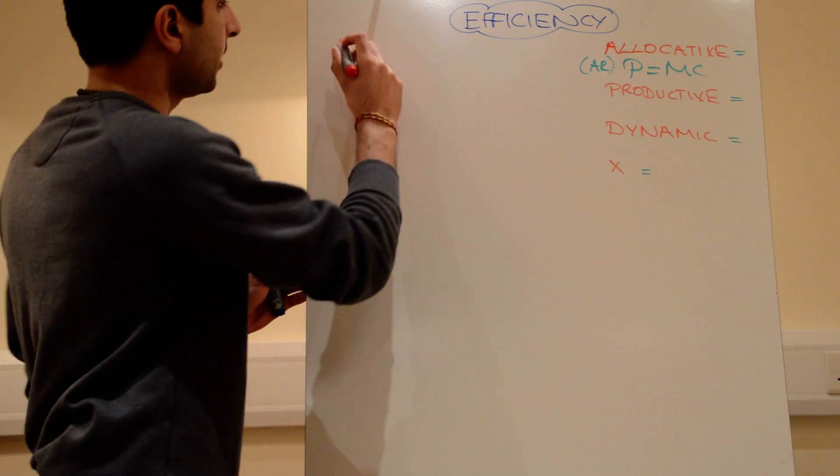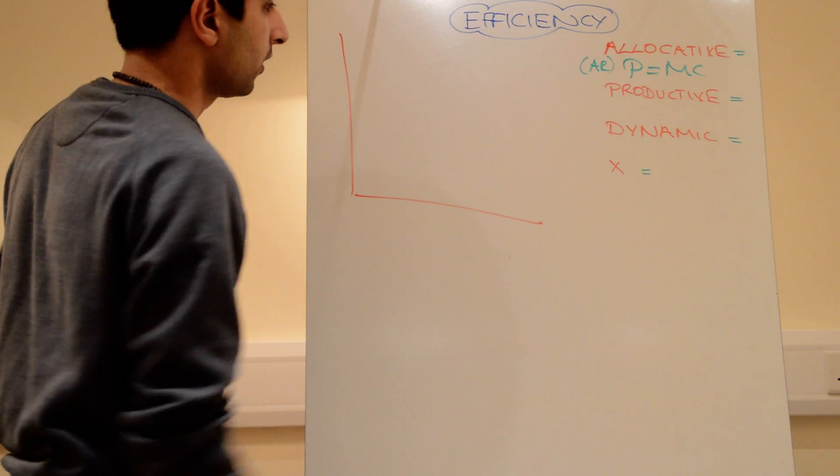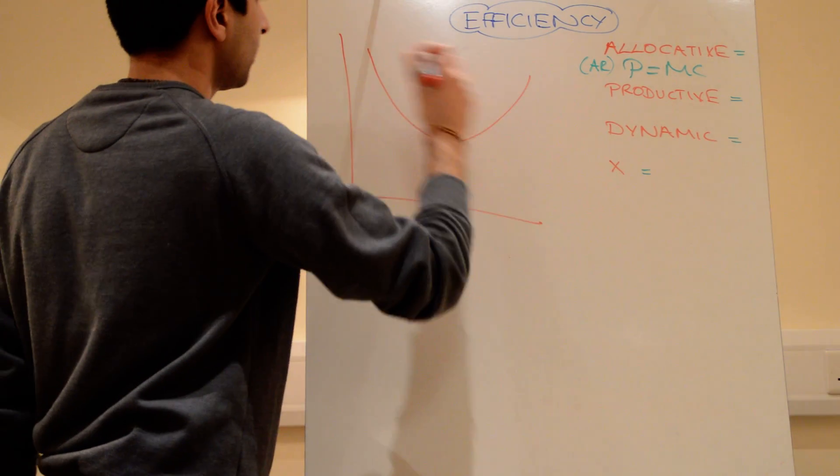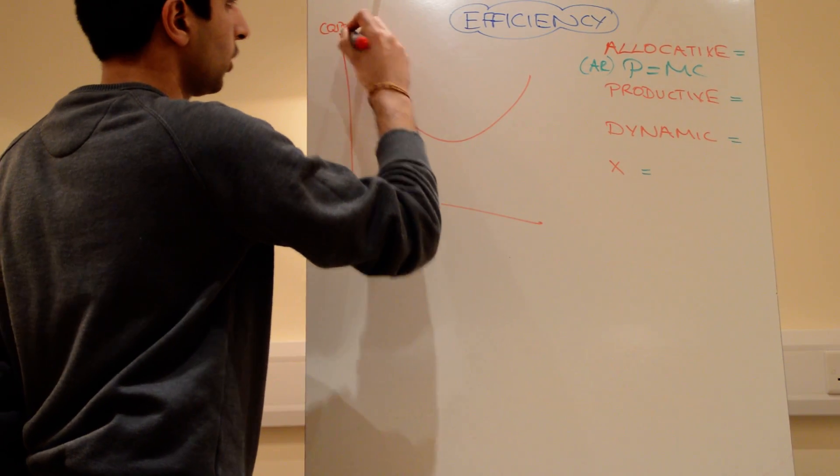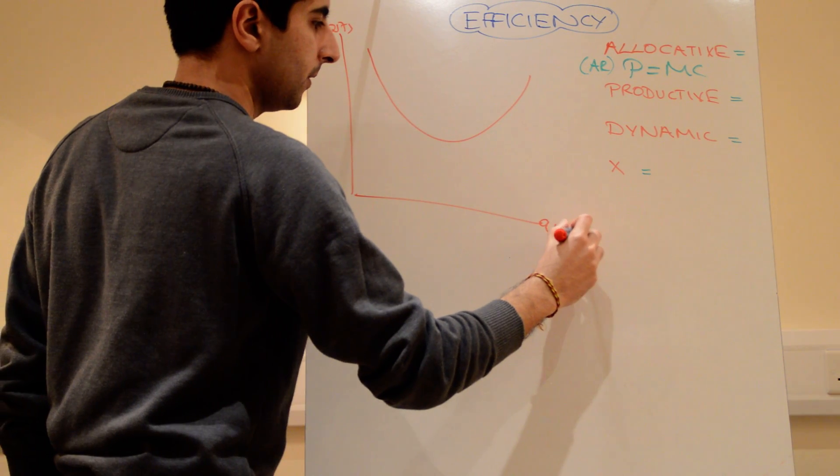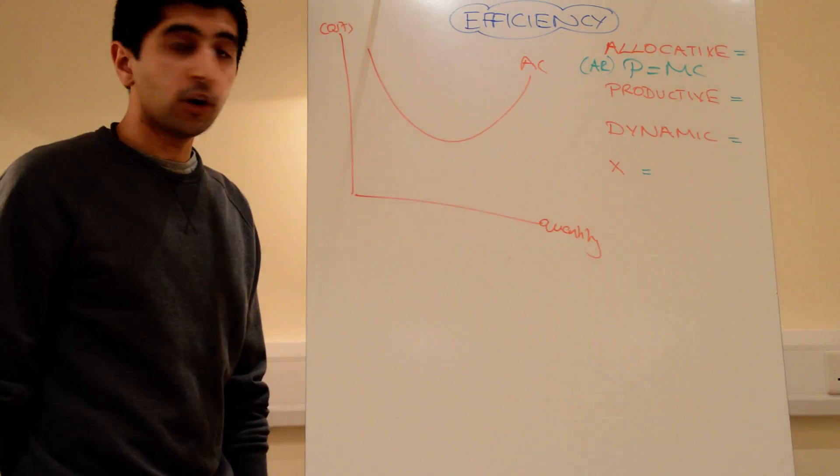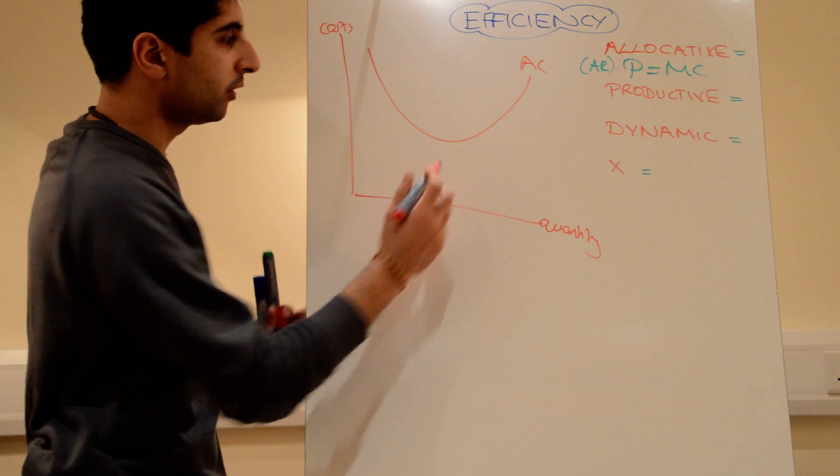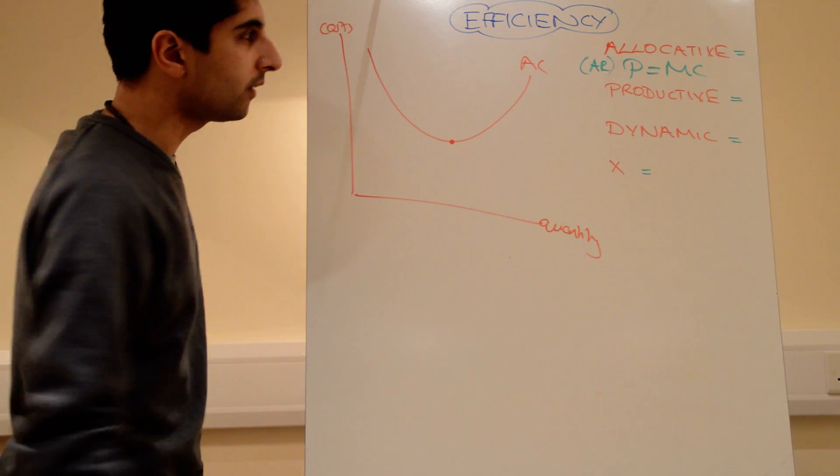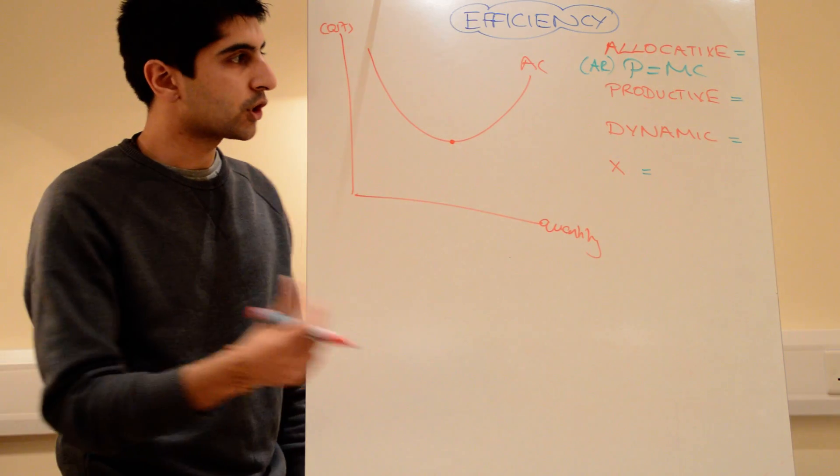On a diagram, very simply, if we have an average cost curve, or we have costs and quantity, minimizing costs but maximizing production happens at the bottom of the average cost curve for a firm.